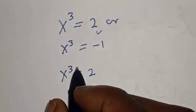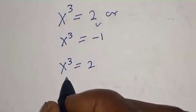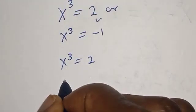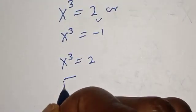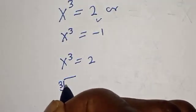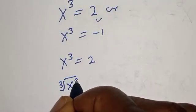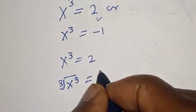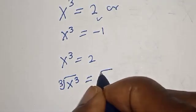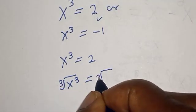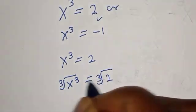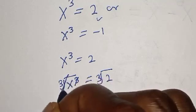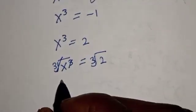For s raised to power 3 equals 2, let's take the cube root of both sides. We have cube root of s raised to power 3 equals cube root of 2. The cube root and the power 3 cancel, giving s equals 2 raised to power one-third.